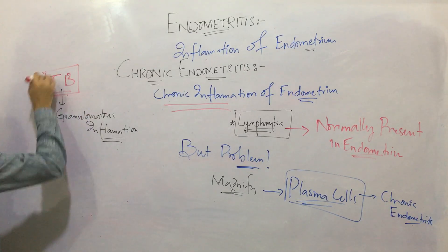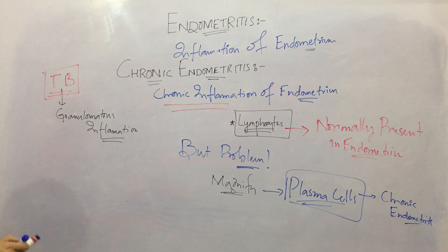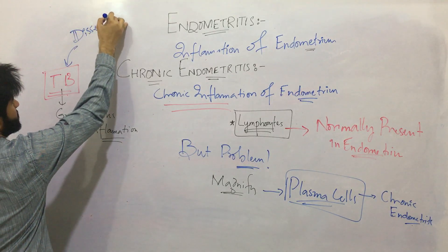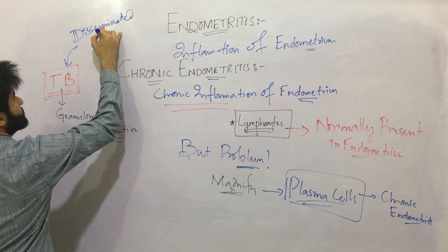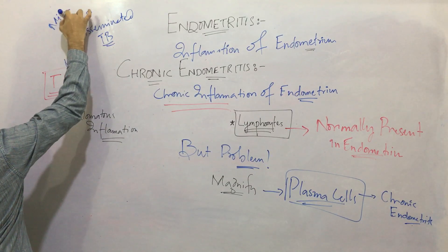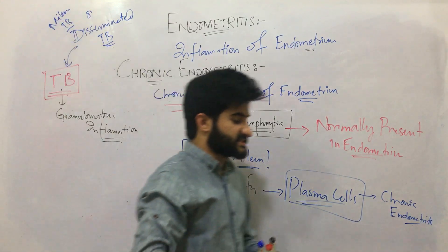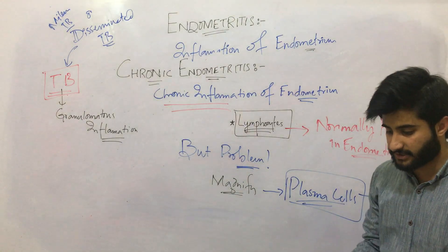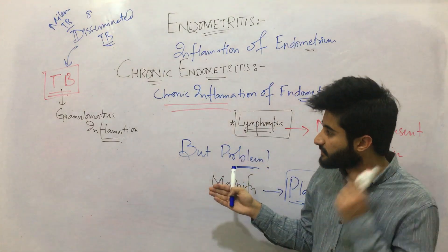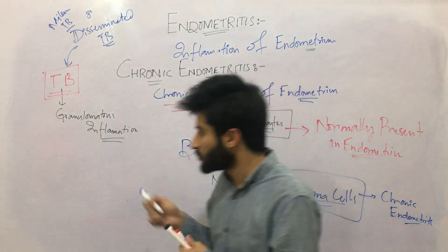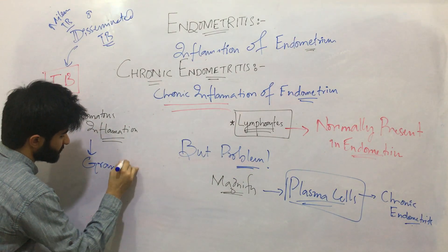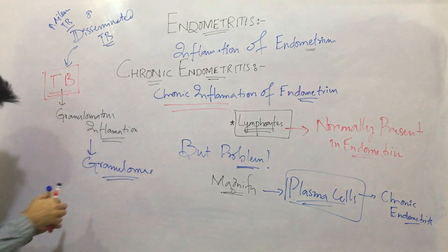To have tuberculosis affect the endometrium, this tuberculosis can be disseminated TB — also known as miliary tuberculosis. If the tuberculosis is disseminated, meaning TB is flowing in the blood, it will come toward the endometrium. As it comes toward the endometrium, it will cause granulomatous inflammation there. So in the biopsy, we will be able to see granulomas. The characteristic feature of granulomas is that we will see epithelioid cells and giant cells. This is also known as Granulomatous Endometritis.